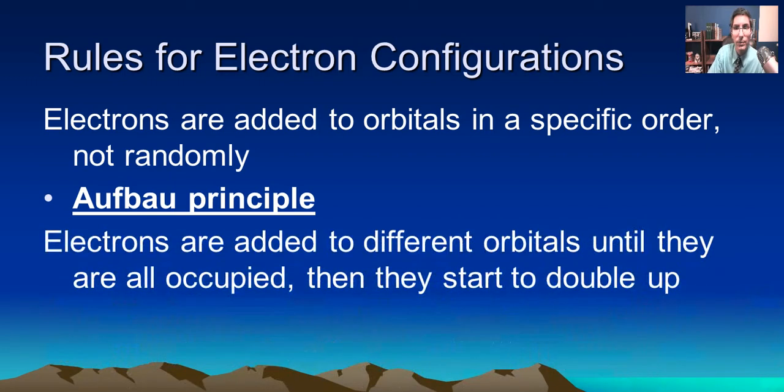Now, there's another principle that we used. We talked about this pretty early on. We said electrons are added to different orbitals until they are all occupied. Then they start to double up. Now, what in the world does that mean?